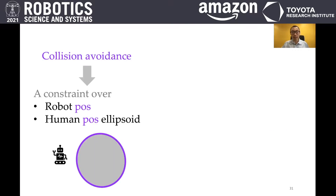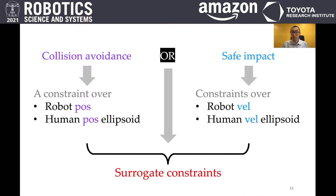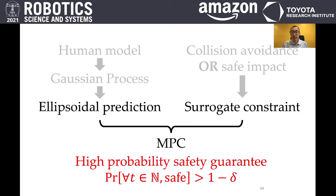Our system enforces collision avoidance by ensuring that the robot will never enter the human position ellipsoid. Informally speaking, our system enforces safe impact by ensuring that the robot velocity is similar to the human velocity. Intuitively, if both velocities are similar, then during collisions the impact will be small. Then we propose a set of surrogate constraints that can disjunctively combine the constraints for collision avoidance and for safe impact. By combining the ellipsoidal prediction and surrogate constraints, we formulate our MPC algorithm that can guarantee safety with a high probability.